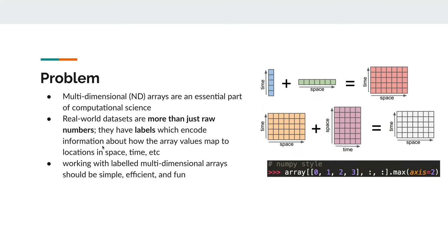So what is the underlying problem? Multi-dimensional arrays are an essential part of computational science, and most of us store data in multi-dimensional data structures because it makes subsequent analyses much easier. But the key problem is that most real-world data, especially biological data, is more than just the raw numbers. NumPy basically just stores raw numbers in a data structure, which is efficient, but reality is more complicated — in reality we often have labels, especially labels for our coordinates.